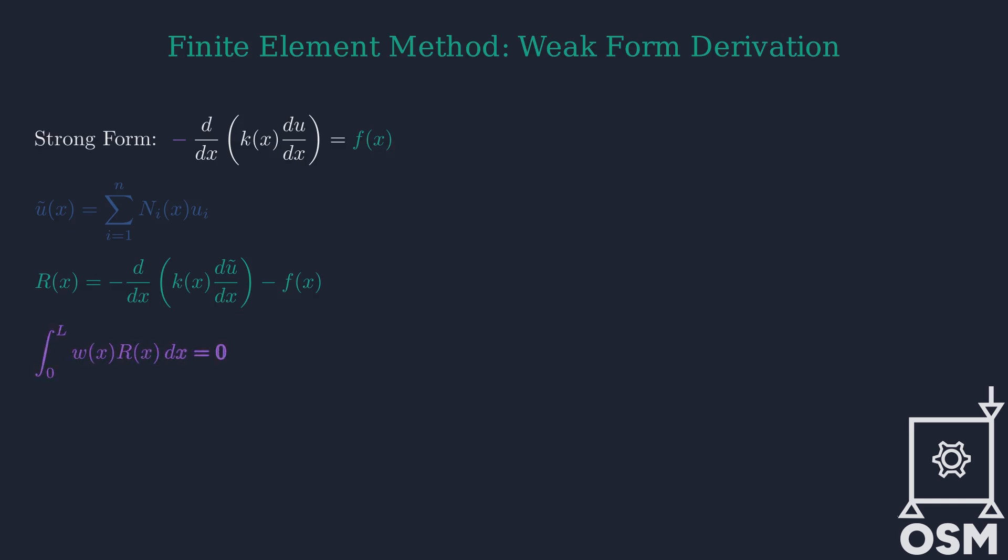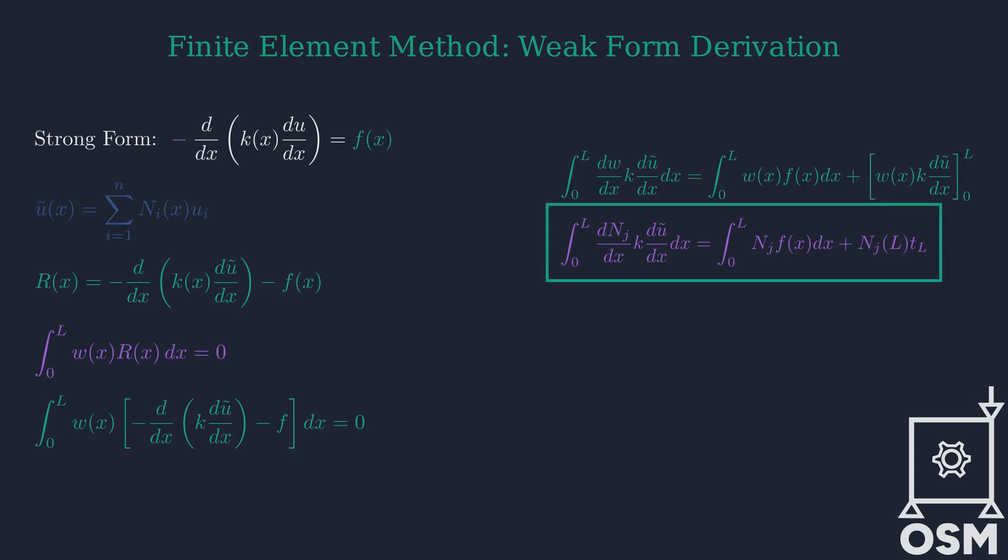To find the best approximation, we enforce that the residual is orthogonal to test functions, leading to the weighted residual form. Using integration by parts, we transfer the derivative from the trial function to the test function, reducing continuity requirements. Finally, by replacing the test function with shape functions, we arrive at the discretized weak form, a linear system ku equals f. This is the cornerstone of the finite element method.